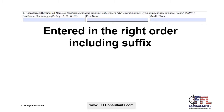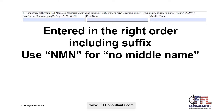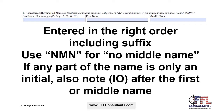The first thing the buyer or transferee must do is complete their last name, first name, and middle name in Box 1, entered in that order: last, first, middle. This is very important to oversee as your customer begins filling out the form. Include any suffix, and if there's no middle name, simply put the initials N-M-N in the middle name box. If any part of the name is only an initial, note in parentheses 'IO' after the first or middle name, representing 'initial only.'